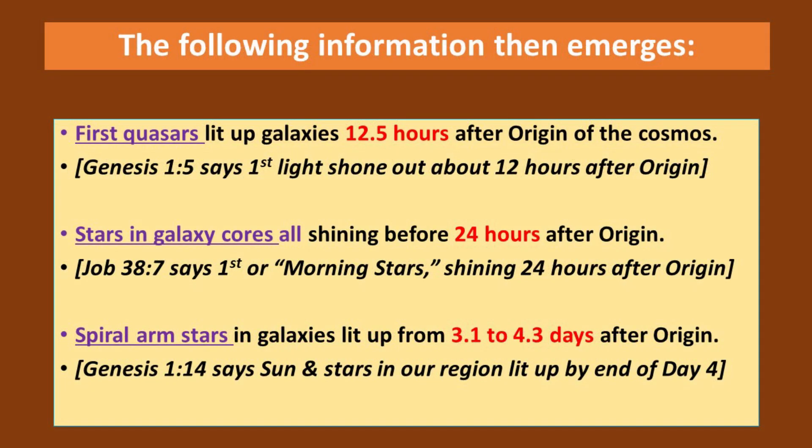The following information then emerges. The first quasars lit up galaxies about 12.5 hours after the origin of the cosmos. Genesis 1:5 says the first light shone out about 12 hours after the initial creation. Stars in galaxy cores were all shining 24 hours after the origin. Job 38:7 says the first or morning stars were all shining in the morning of the first day, that is 12 to 24 hours after the origin. Spiral arm stars and galaxies lit up from 3.1 to 4.3 days after the origin. Genesis 1:14 says the sun and stars in our region had lit up by the end of day 4. This means that the Genesis account of creation is true, and the galaxies had all formed by the end of day 4 in creation week.